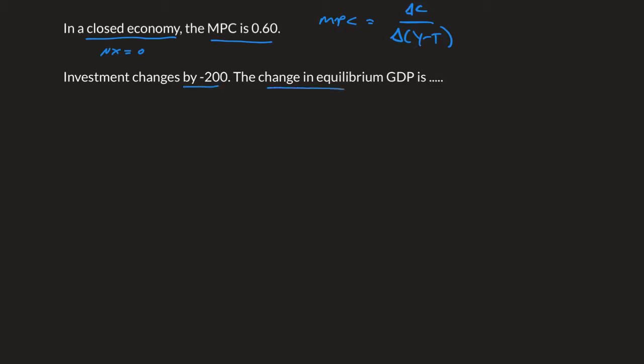So what's the change in equilibrium GDP? As soon as you see something like this - something changes which leads to a different change - you have to think: multiplier.